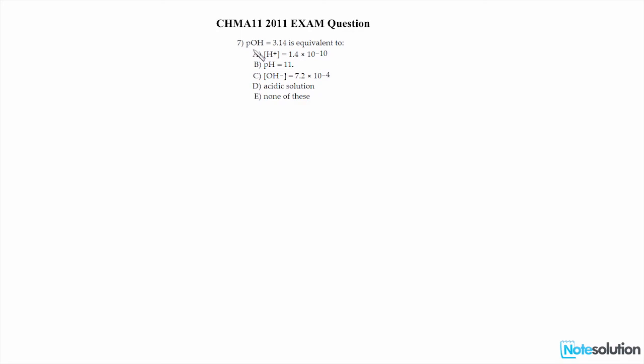This is question number 7 from your KMA 11 2011 midterm. And in this question, we are looking for an option which amounts to a pOH of 3.14. Well, at its simplest level, the pOH is a measure of the alkalinity of a substance, and can be expressed as equal to the negative log of a solution's hydroxide concentration.